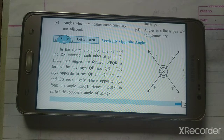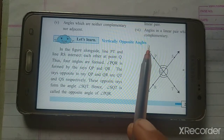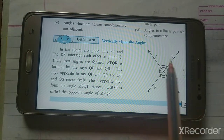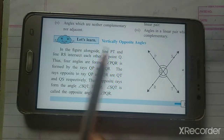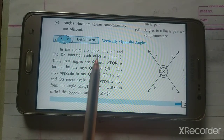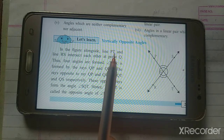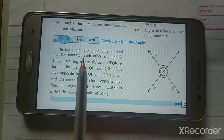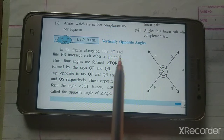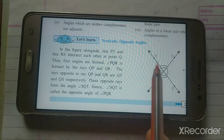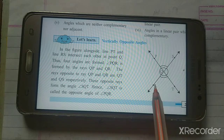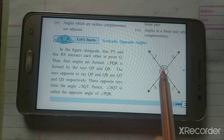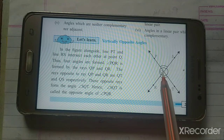Good morning all of you. Today we are going to learn vertically opposite angles. Vertically opposite angles means — in the figure, line PT and line RS intersect each other at point Q. Line PT is here and line SR is here, and both intersect at point Q.